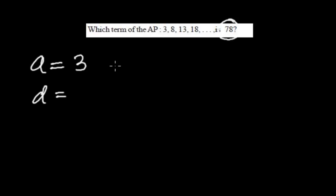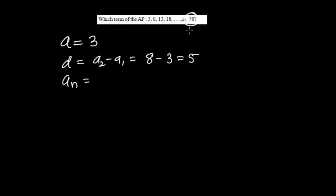I can take any one. Let me do a₂ minus a₁. So a₂ here is 8 and a₁ is 3, so common difference is 5. And the nth term aₙ—I don't know the value of n, but the value of the nth term is 78.